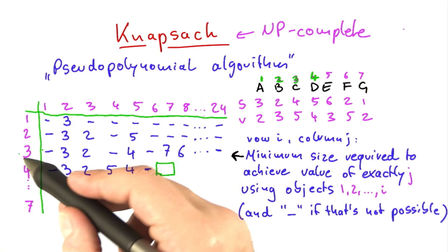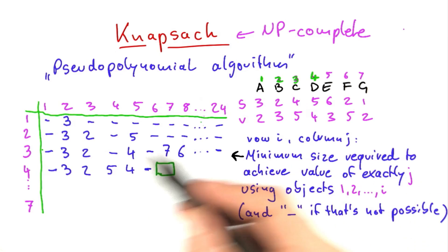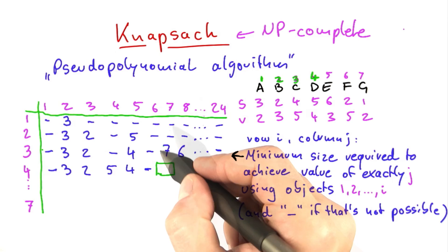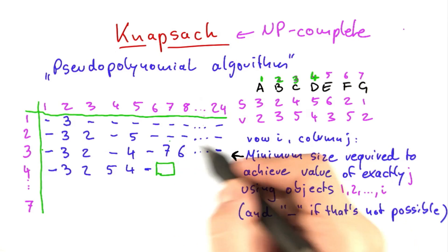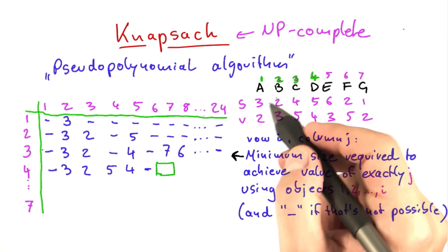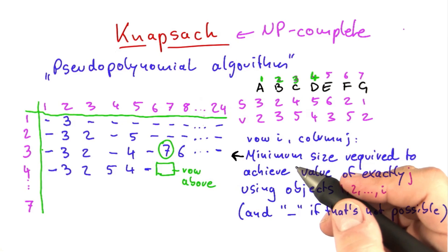How can we achieve a value of 7? So we already know that we can achieve a value of 7 using these three objects a, b, c, because we have this row here. Now what are the different possibilities of achieving a value of 7? We could either do this through the row above because we know that we can achieve it using objects a, b, and c.